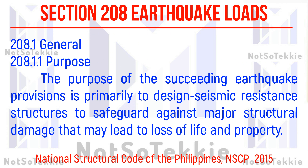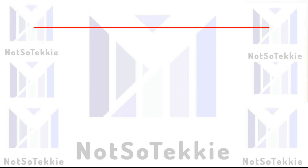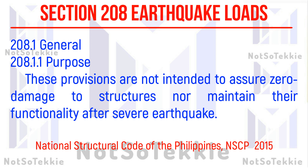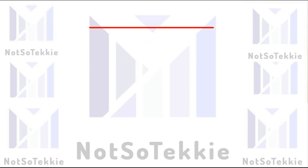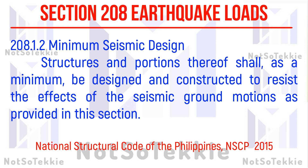let's review first what the code says — Section 208, the earthquake load. Section 208.1, Purpose: the purpose of this section's earthquake provisions is primarily to design seismic resistant structures to safeguard against major structural damage that may lead to loss of life and property. These provisions are not intended to assure zero damage in the structure nor maintain their functionality after a severe earthquake.